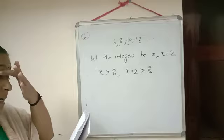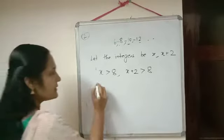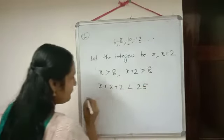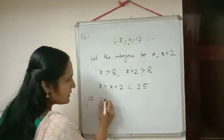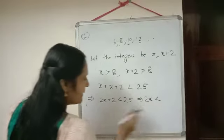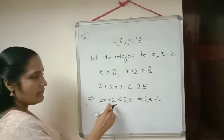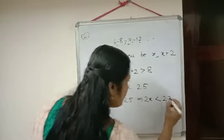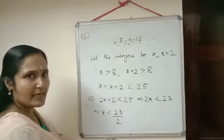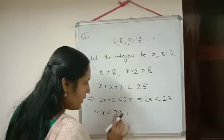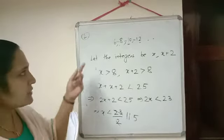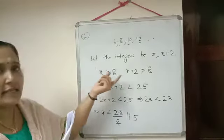So 2x plus 2 less than 25. Shifting 2 to the right: 2x less than 23, so x less than 23 by 2, which equals 11.5. So we need consecutive even integers where both numbers are greater than 8 and x is less than 11.5.